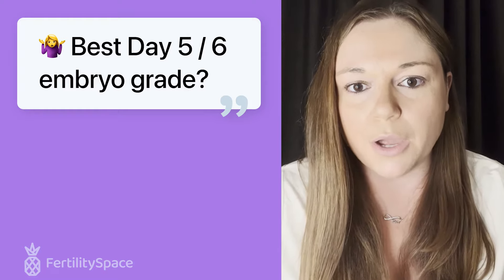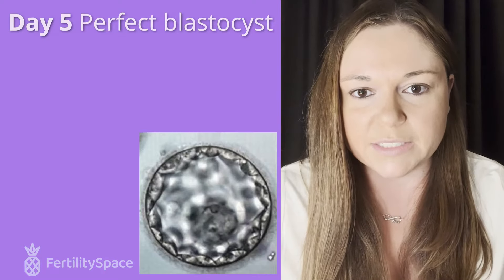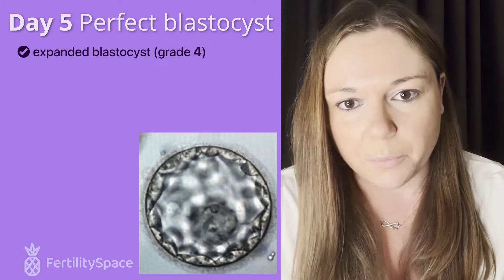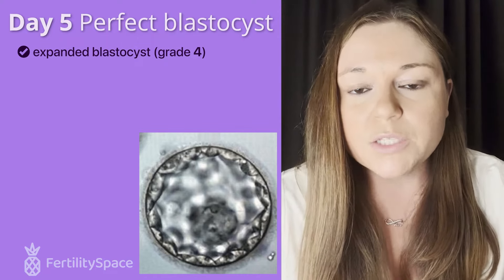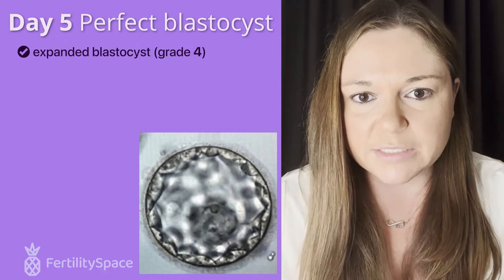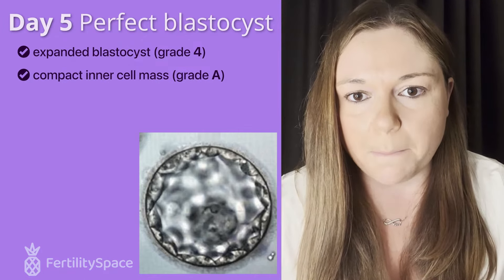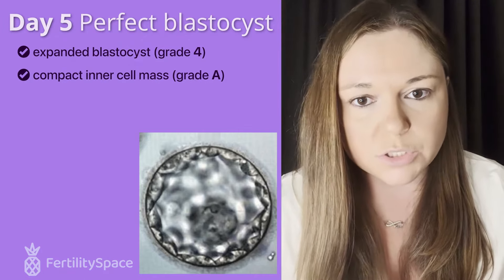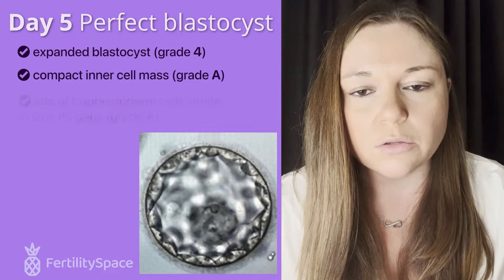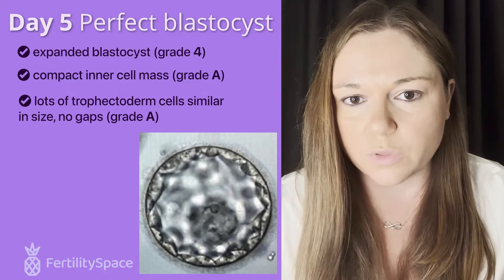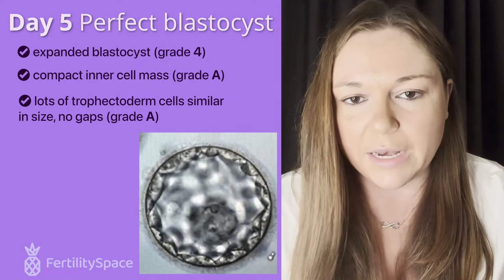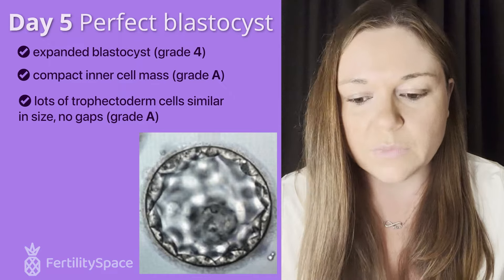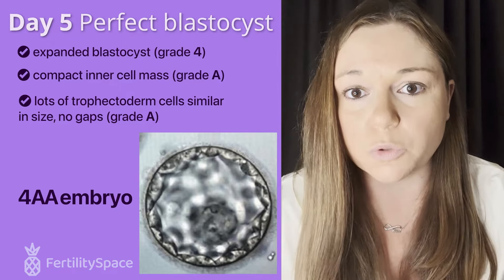What is the perfect day five blastocyst? On day five, what I'm expecting to see is an expanded blastocyst — you wouldn't see a hatching embryo on day five naturally, as that would be too quick for development. You'd want a really compact inner cell mass that almost looks like a circle, a lot of trophectoderm cells that are very similar in size, and no gaps in the trophectoderm. That would be a 4AA embryo, which is ideal for day five.